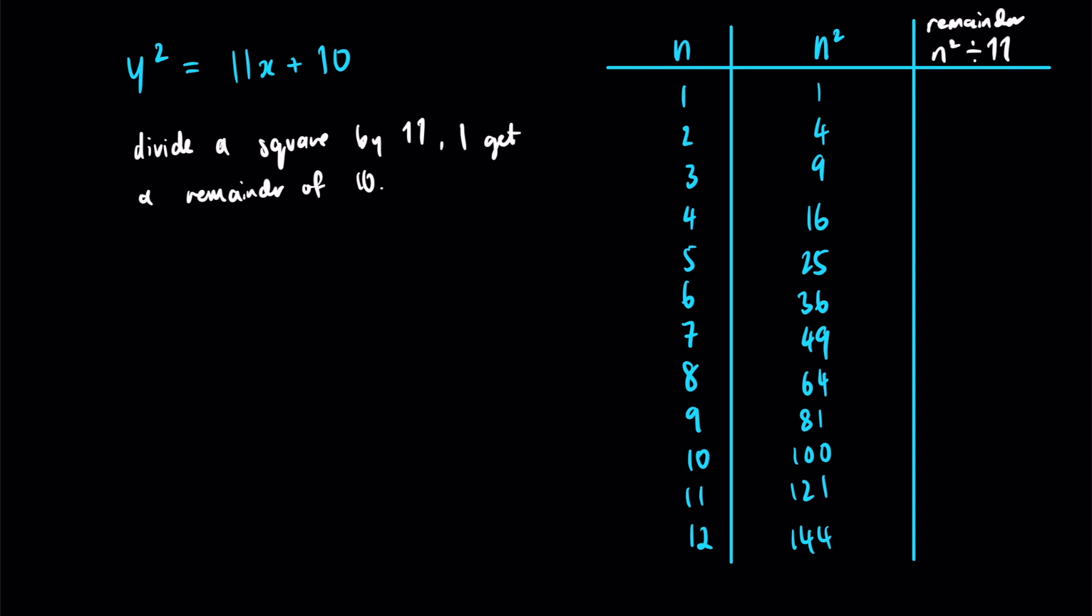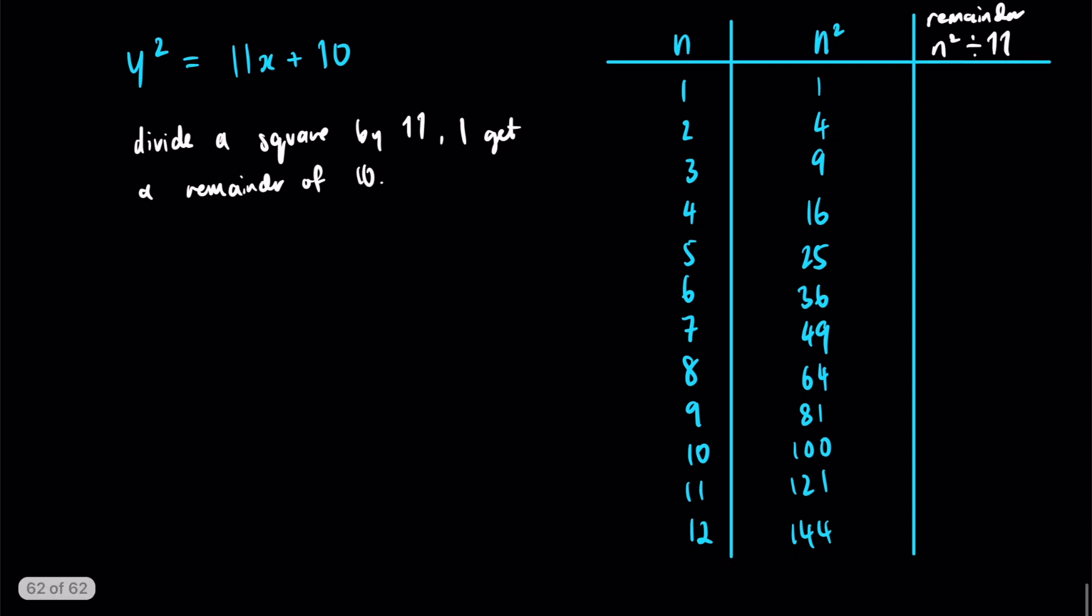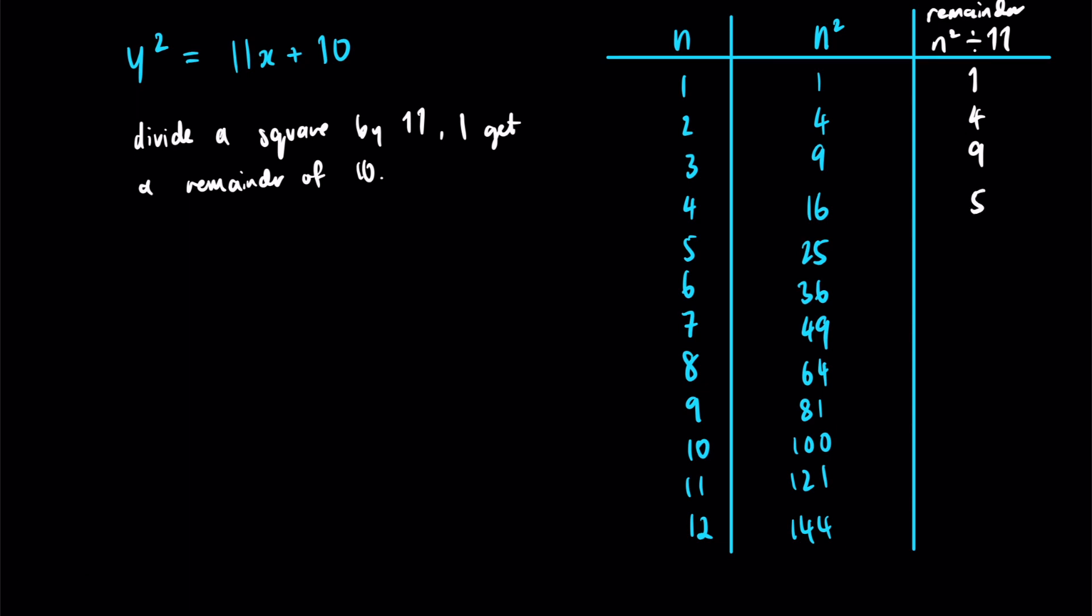Starting at 1, 1 divided by 11 is 0 remainder 1. 4 divided by 11 is 0 remainder 4. 9 will have a remainder of 9. 16 divided by 11 is 1 remainder 5. 25 divided by 11 is 2 remainder 3. 36 divided by 11, 3 remainder 3. 49 has a remainder of 5. 64 has a remainder of 9. 81, 77 plus 4 remainder of 4.